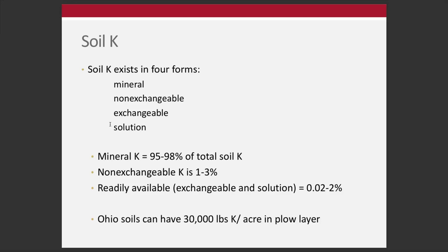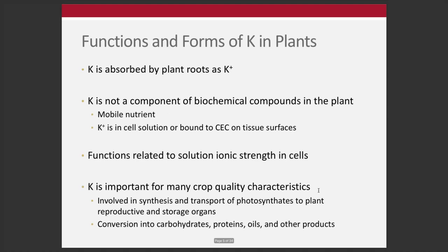Mineral K makes up the vast majority of soil K — most potassium in the soil is in the mineral fraction and is really unavailable. Non-exchangeable is maybe one to three percent. The readily available fraction — exchangeable on the cation complex plus what's in solution — is a very small percentage. Soils in Ohio, recently glaciated, can have up to 30,000 pounds of K per acre in the plow layer. Similar to the paradox of nitrogen in the atmosphere, we almost have a paradox of potassium in the soil — it just isn't available in a form plants can access.